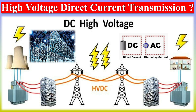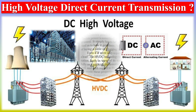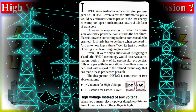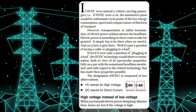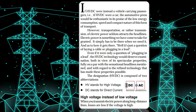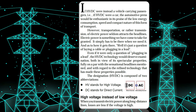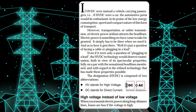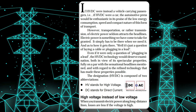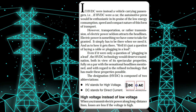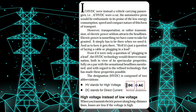The backbone of our modern power grids lies in the efficient transmission of electricity from power plants to homes, industries, and cities. Two primary contenders vie for supremacy in this arena: the high-voltage AC (HVAC) system and the high-voltage DC (HVDC) system. Each has its strengths, weaknesses, and unique applications.